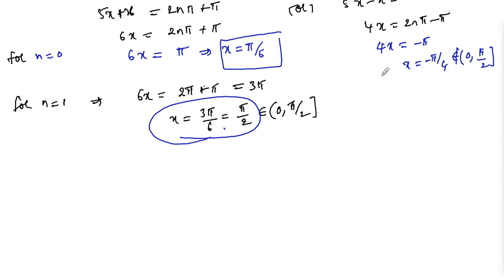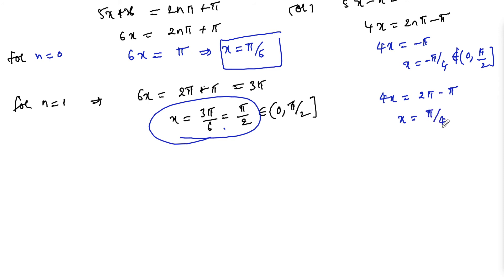Similarly, for n = 1 in the second case: 4x = 2π - π = π, so x = π/4. Since π/4 belongs to (0, π/2), we can consider this value.